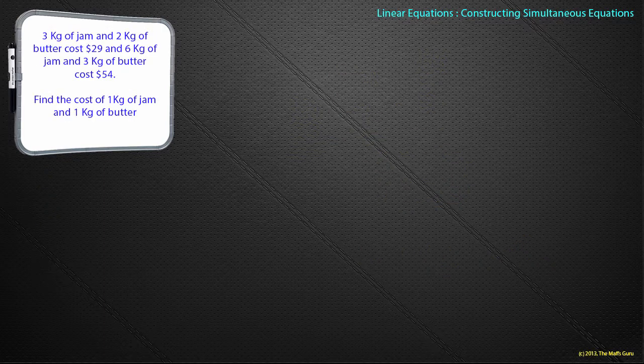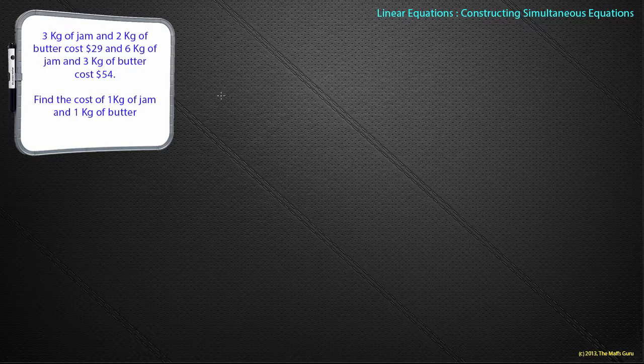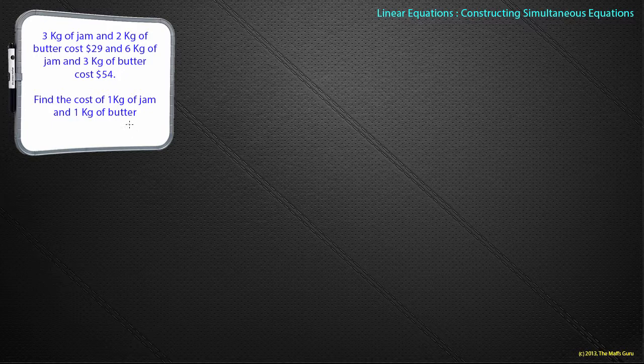3 kilograms of jam and 2 kilograms of butter cost $29, and 6 kilograms of jam and 3 kilograms of butter cost $54. Find the cost of 1 kilogram of jam and 1 kilogram of butter. How many unknowns do we have? How many things do we not know? It appears we need to know the cost of jam and the cost of butter. I could use x and y. Let's use something different. Let's use j and b.